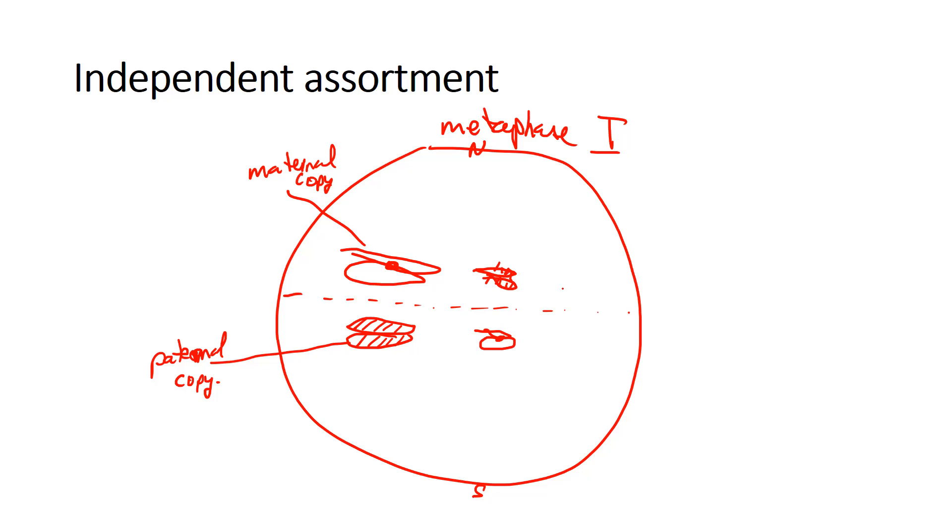So because of that, we get offspring that maybe sometimes look more like mom if they are carrying a higher percentage of maternal copies of that homologous pair. But it's all independent, and that also contributes to genetic variation in the offspring—you never know how many maternal or paternal you're going to get.